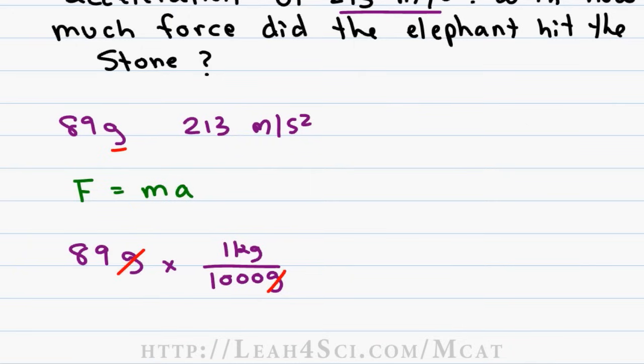In my last video I showed you the trick when you're dividing by a thousand that has three zeros you simply take the decimal and move it back three spaces. This gives me a new and usable number 0.089 kilograms.